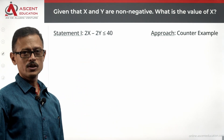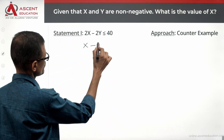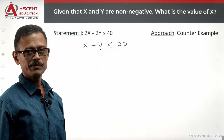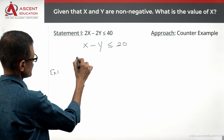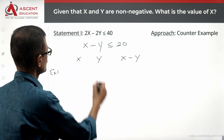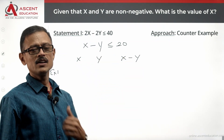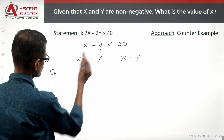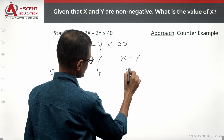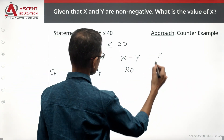Statement 1: 2x minus 2y is less than or equal to 40. We are going to look at a counter-example. Rewriting, we get x minus y is less than or equal to 20. For example, let x = 24 and y = 4. Then x minus y equals 20, which satisfies the condition. So x is 24 in this case.